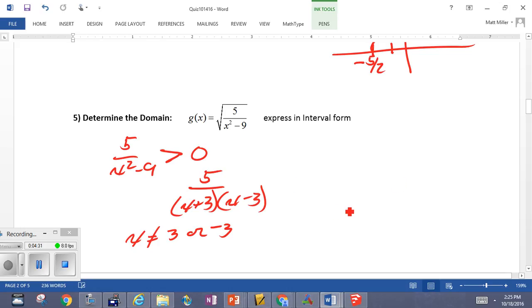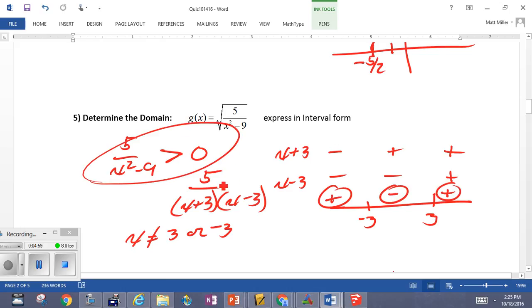So, we can set up our sign table in and around negative 3 and positive 3 with the factors x plus 3 up top here, x minus 3. We should be well comfortable with sign tables at this point. Negative plus plus negative negative plus overall plus minus plus. So, what are we looking for?